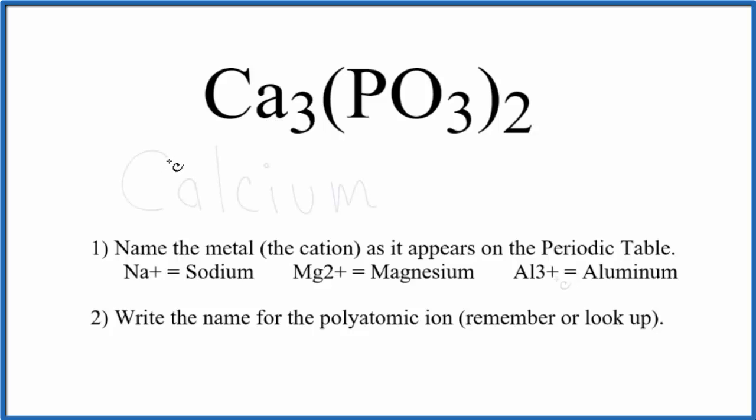That's the calcium, and then we'll write the name for that polyatomic ion. You've either memorized that PO3 is the phosphite ion, or you're allowed to look that up on a table of ions.